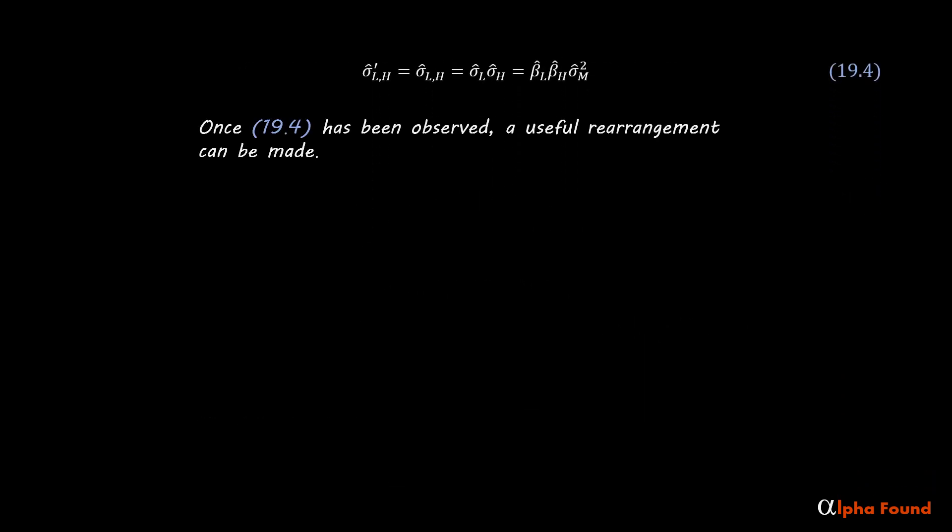Once the covariance between the high and low cap M beta portfolios has been observed, a useful rearrangement can be made. Putting equation 19.5 into the ideal decomposition of variance gives the result.